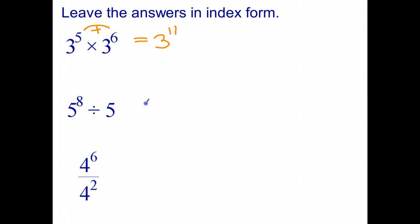The index law for dividing powers with the same base is to subtract indices. Now this number doesn't appear to have an index on it, but it's a 1. Any number without a power is really to the power of 1. So we have 5 to the power of 8 subtract 1 equals 5 to the power of 7.